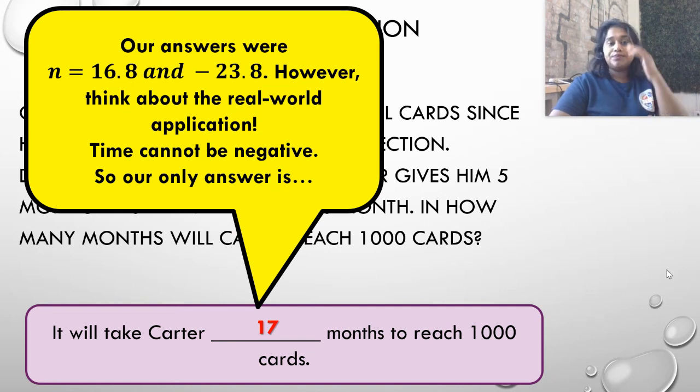Really, it'll be a little over 1,000 cards. But in order to reach that minimum value of 1,000 cards, he would have had to have been doing this system with his father, getting five more every month for 17 months. That's a lot of cards for Carter's father to be getting him every month.